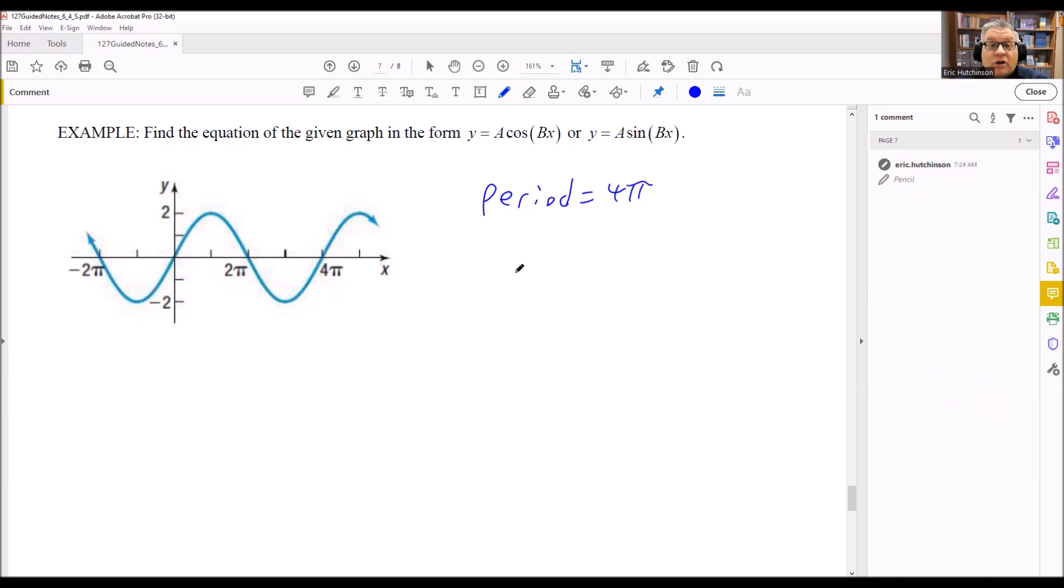Now, a formula that we use to find the period that's related to B is this one: the period equals 2π over B. This is the formula we're going to use. We already know the period is 4π, so we're going to do 4π equals 2π over B.